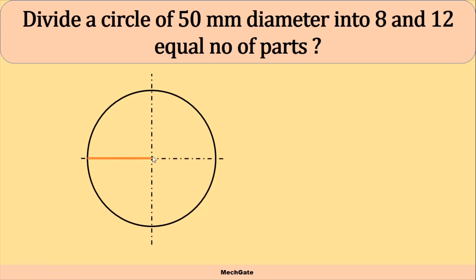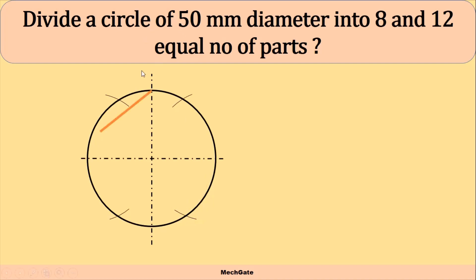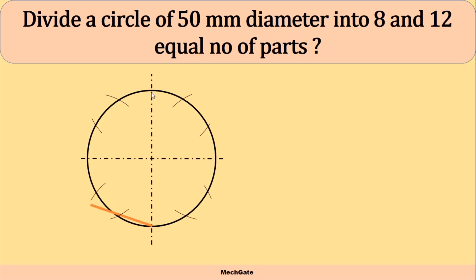Now, with the center point and radius equal to the radius of the circle, we draw an arc on the circle above the center line and below the center line — making two arcs. Again using this point as center, we make an arc above and below the center line. Similarly, with the vertical point as center, we follow the same process with the same radius and draw arcs. This is the simplest way to divide a circle into 12 equal parts. Now we join the lines and give some numbering.